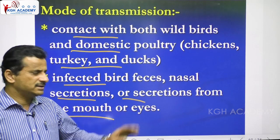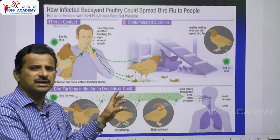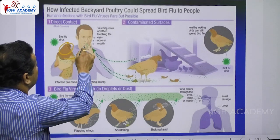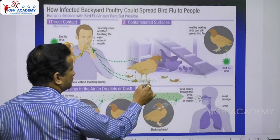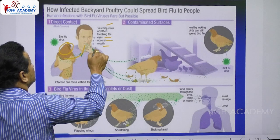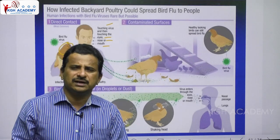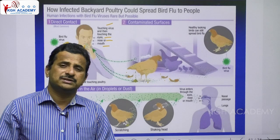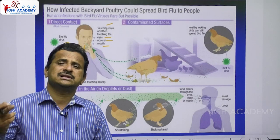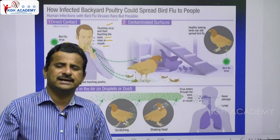It is very clear how a bird transmits this virus. The bird flu virus is present in the bird, and it directly enters the person's body through handling — directly touching the bird and then touching the eyes, nose, or mouth allows the virus to enter directly. Healthy-looking birds can still spread bird flu. Generally we think birds are healthy, but even healthy birds can transmit this disease. Because of bird flu, there can be mass death of birds, yet healthy-looking birds can still contain and transmit the virus to humans.